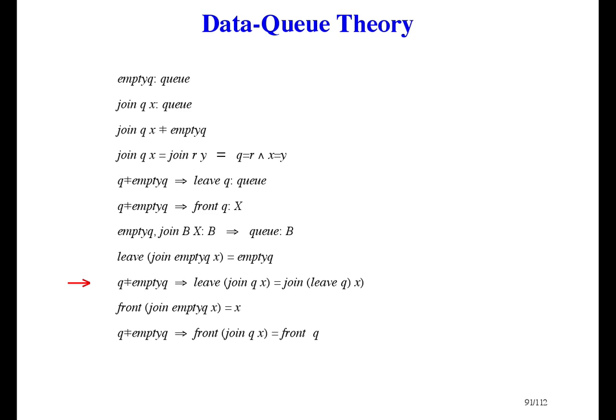This one says if something joins an empty queue and then something leaves the queue, the result is the empty queue. This one says if something joins a non-empty queue and then something leaves the queue, the result is the same as if something leaves first and then something joins — in other words, if the queue is non-empty, joining and leaving commute. This one says if something joins an empty queue, then it's the front. And the last one says if something joins a non-empty queue, then the front doesn't change. And that's it for queue theory.